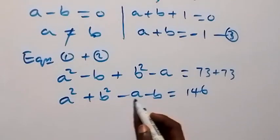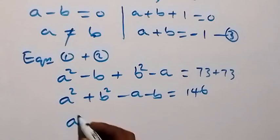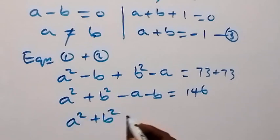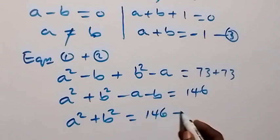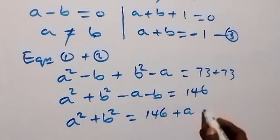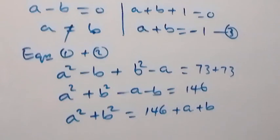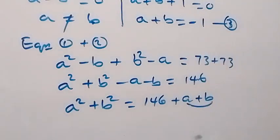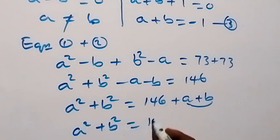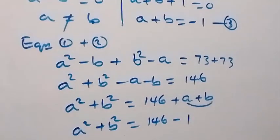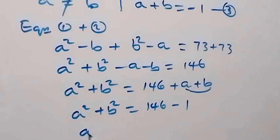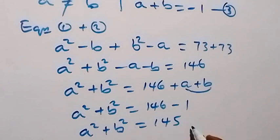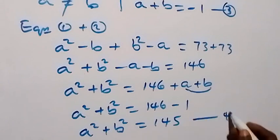Let's take minus a minus b to the other side. We have a squared plus b squared equals 146 plus a plus b. From equation 3, a plus b is simply minus 1. So what we have now becomes a squared plus b squared equals 146 minus 1, which gives us a squared plus b squared equals 145. Let's label this as equation 4.